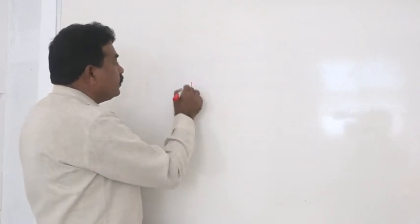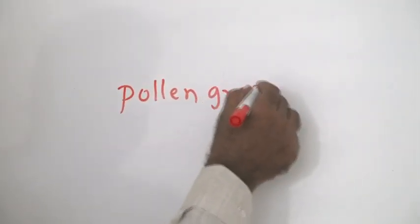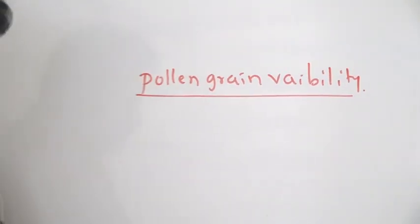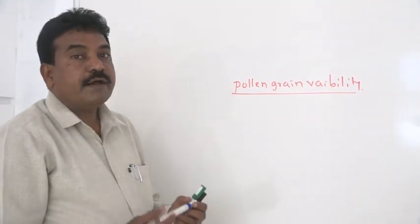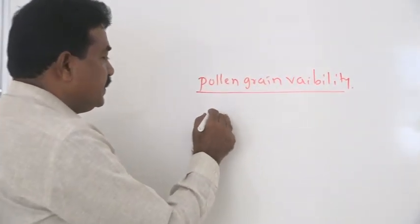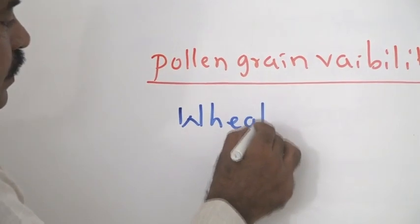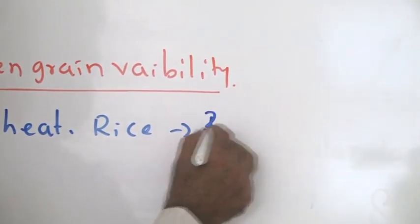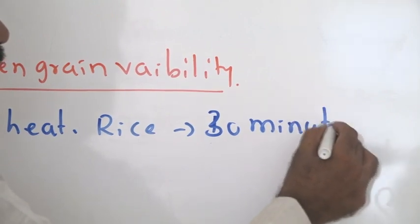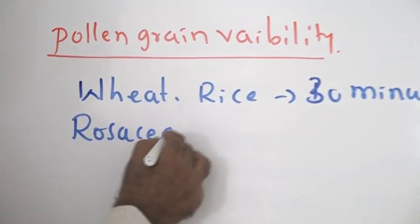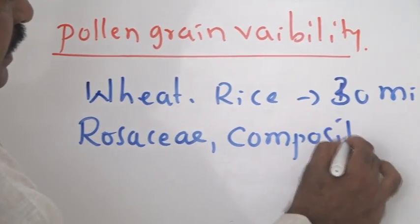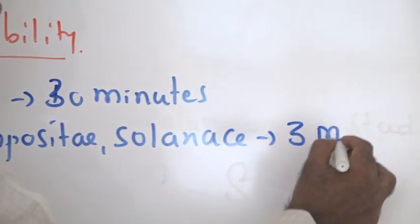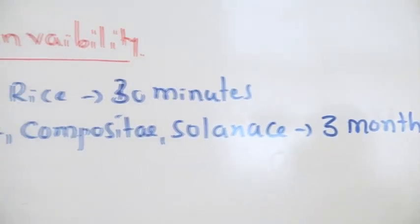Once again, one more term we have to discuss - that is pollen grain viability. Different plants show different pollen grain viability depending on a particular species. For example, species like wheat and rice, the survival or viability of pollen grain is just 30 minutes only. If you take the plants like Rosaceae, Compositae member, as well as in case of Solanaceae, in these plants up to three months the pollen grain can be survived.